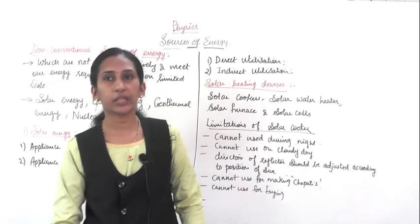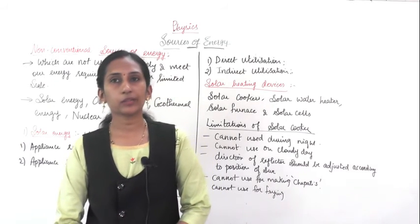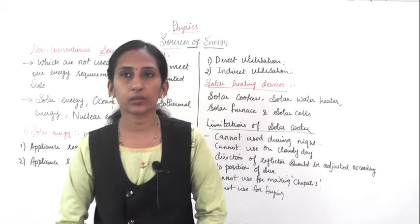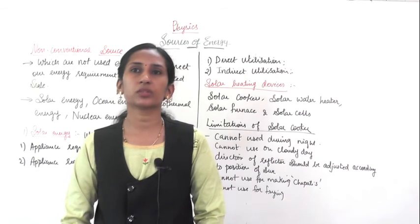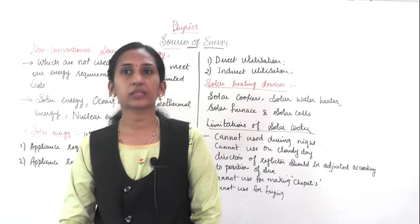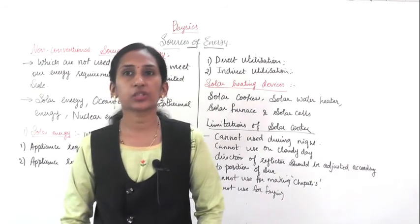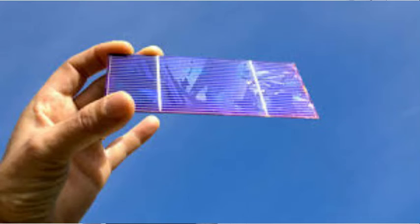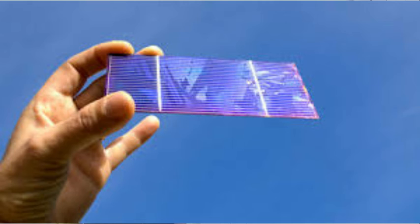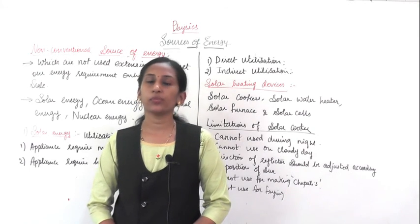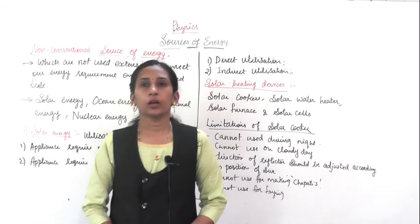If you look at other solar devices, you can see that solar cells are used in many applications including toys, buildings, lighting, and televisions. Many appliances use solar cells. These are some of the uses of solar energy. Thank you.